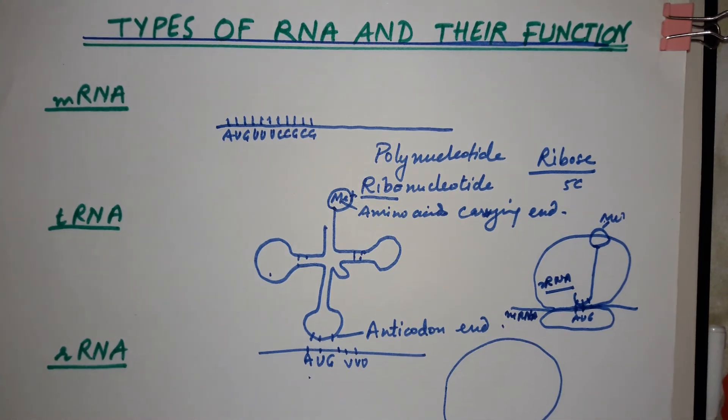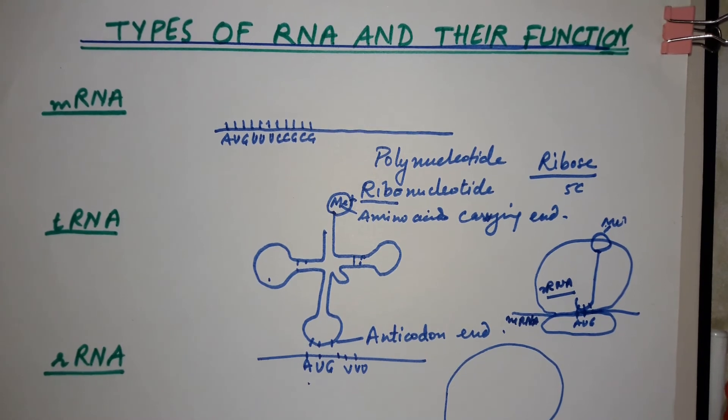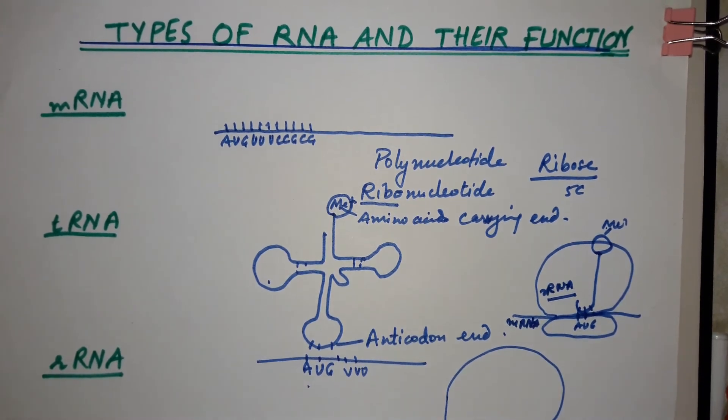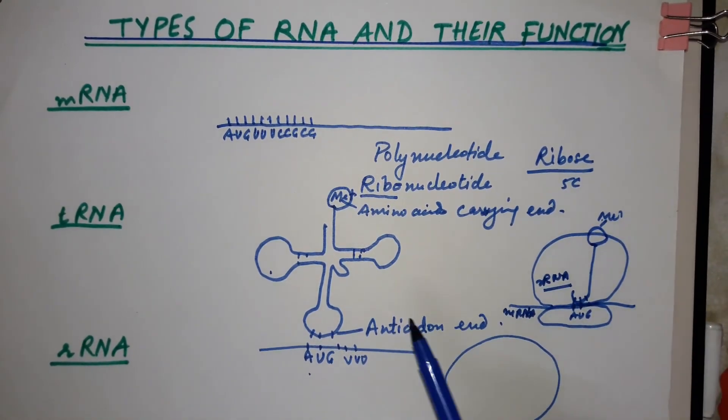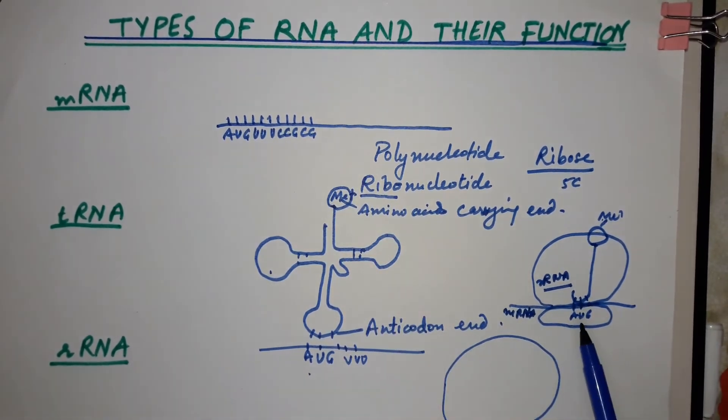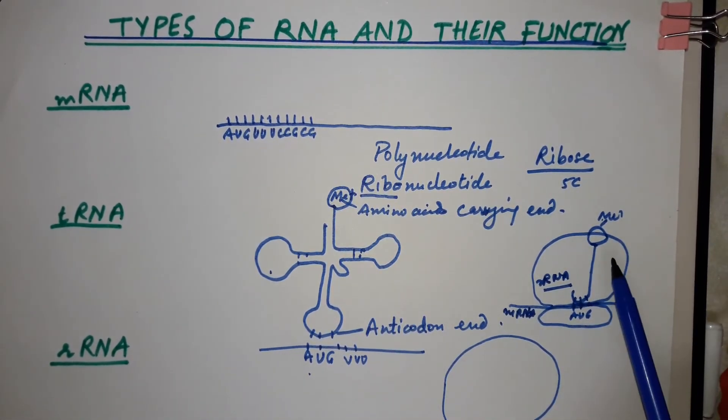This is the structure of the three RNAs. My next video will be on translation, which means how this information from messenger RNA is translated into a protein in the ribosomes, the factory of the cell.